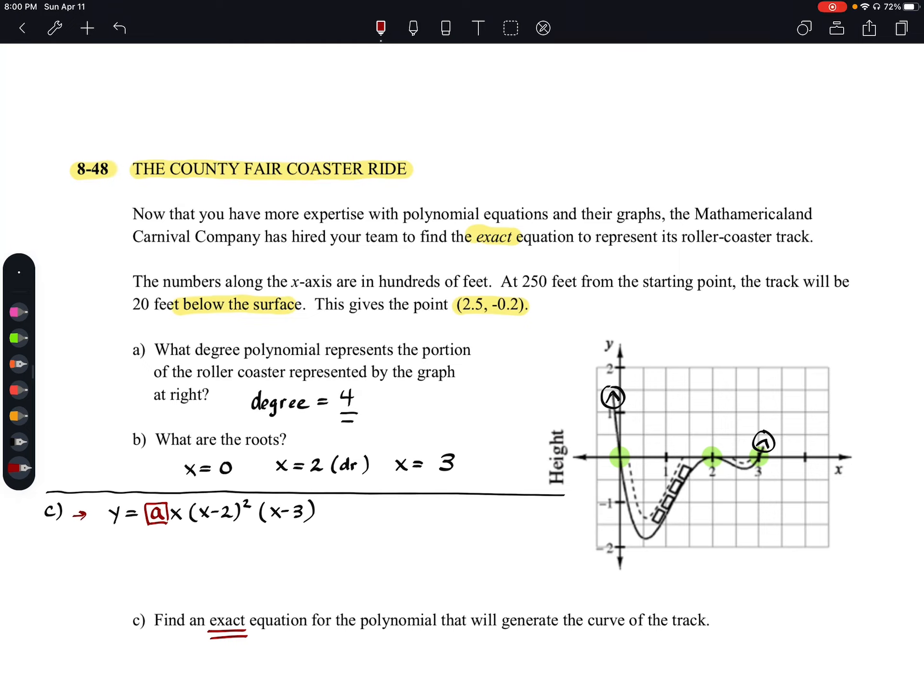Our goal here is figure out a point to use. If we think back up here to when we were reading it, it says the numbers along the x-axis are in hundreds of feet. So at 250 feet from the starting point, the track will be 20 feet below the surface. So 2.5, negative 0.2, that should exist here. So at 2.5, they said that we'd be down here at negative 0.2.